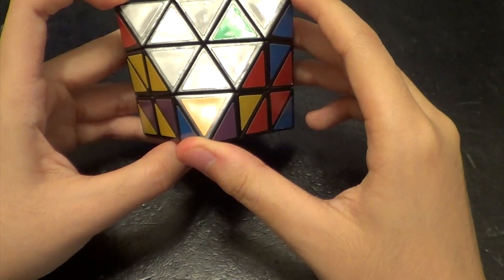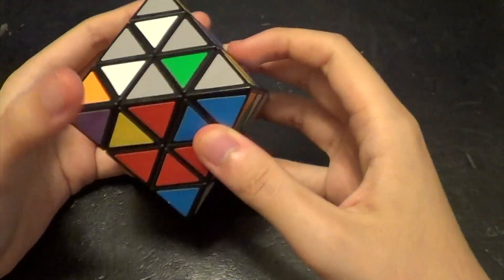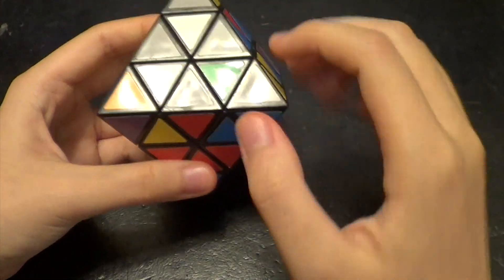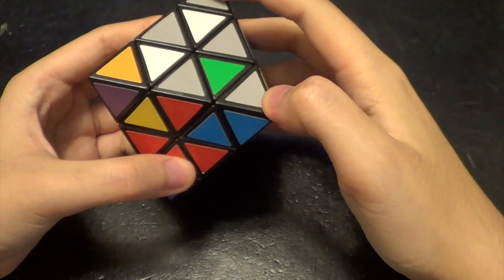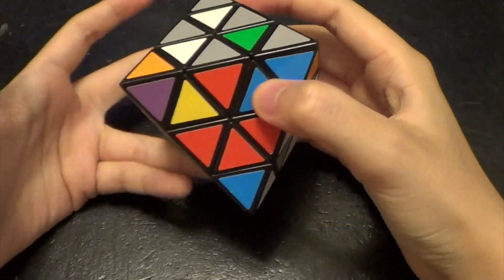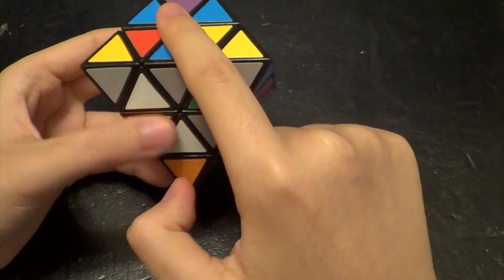So we can orient the cube in a way that puts all three of these in the front face. So how that would look is like this, where this is up, this is front, this is left, and this is right.